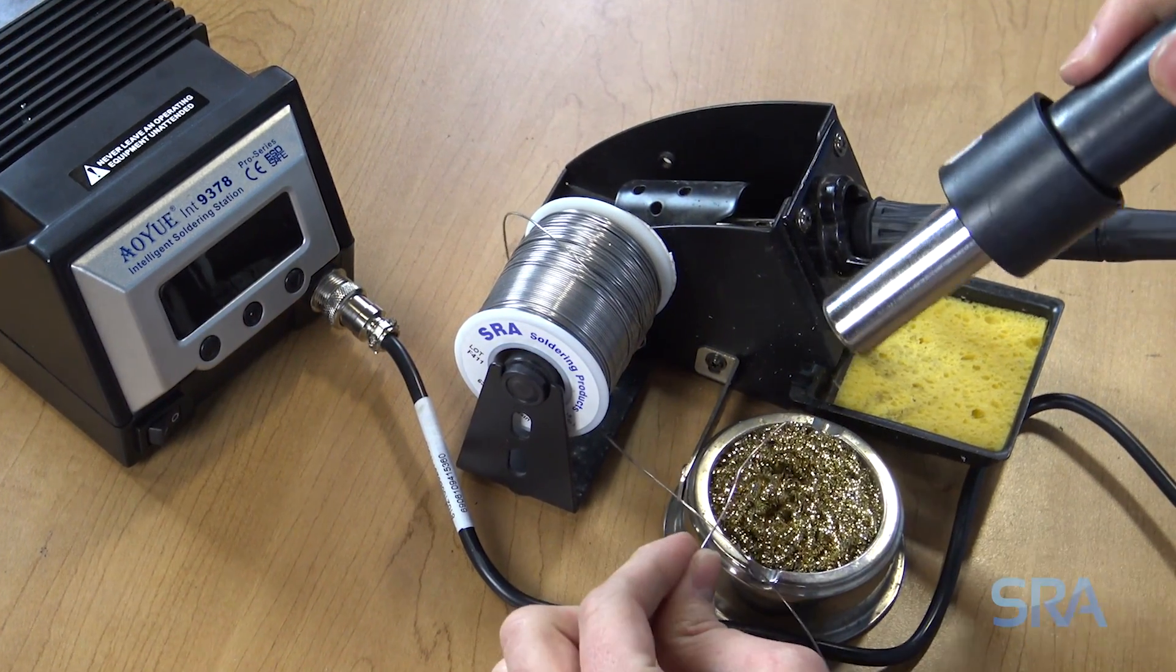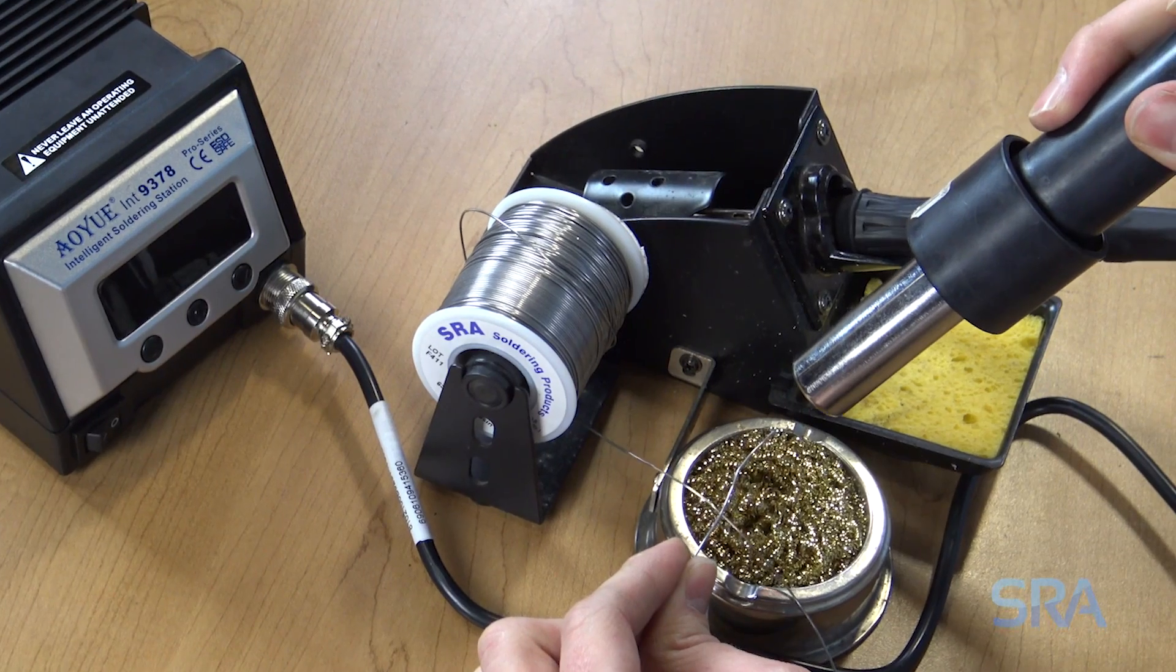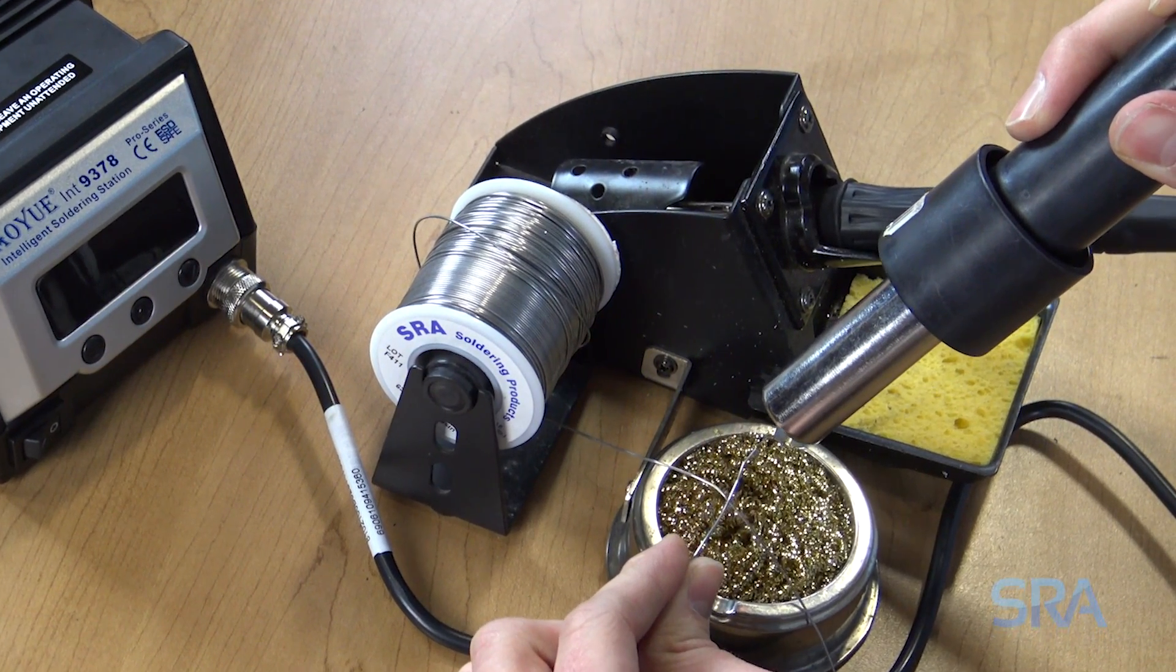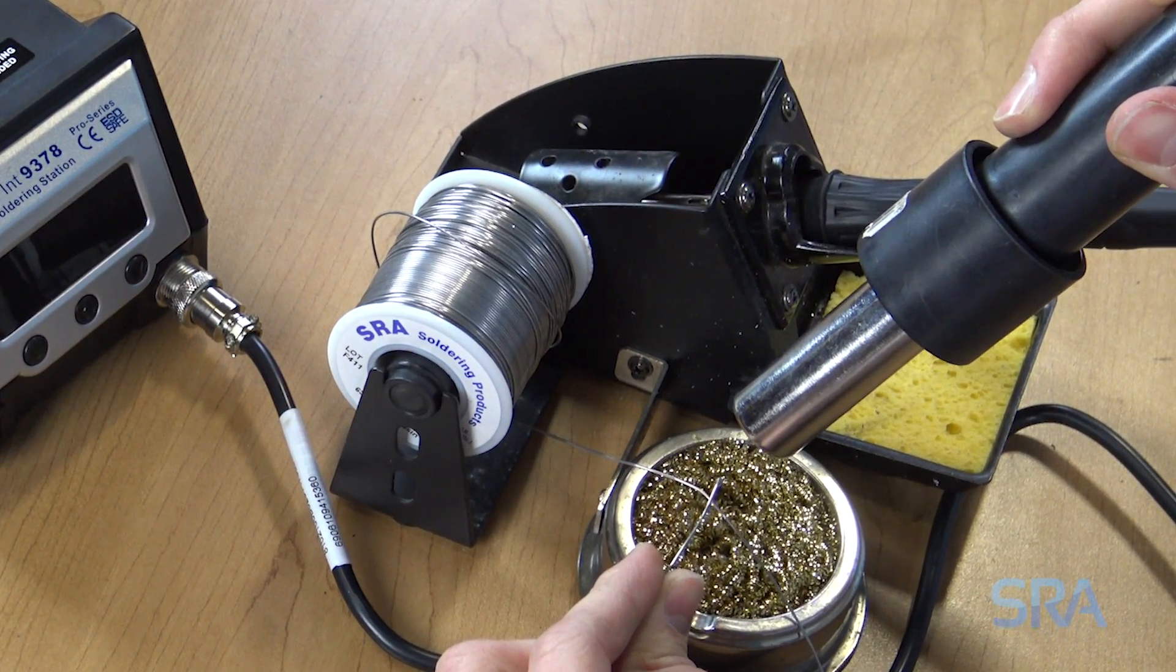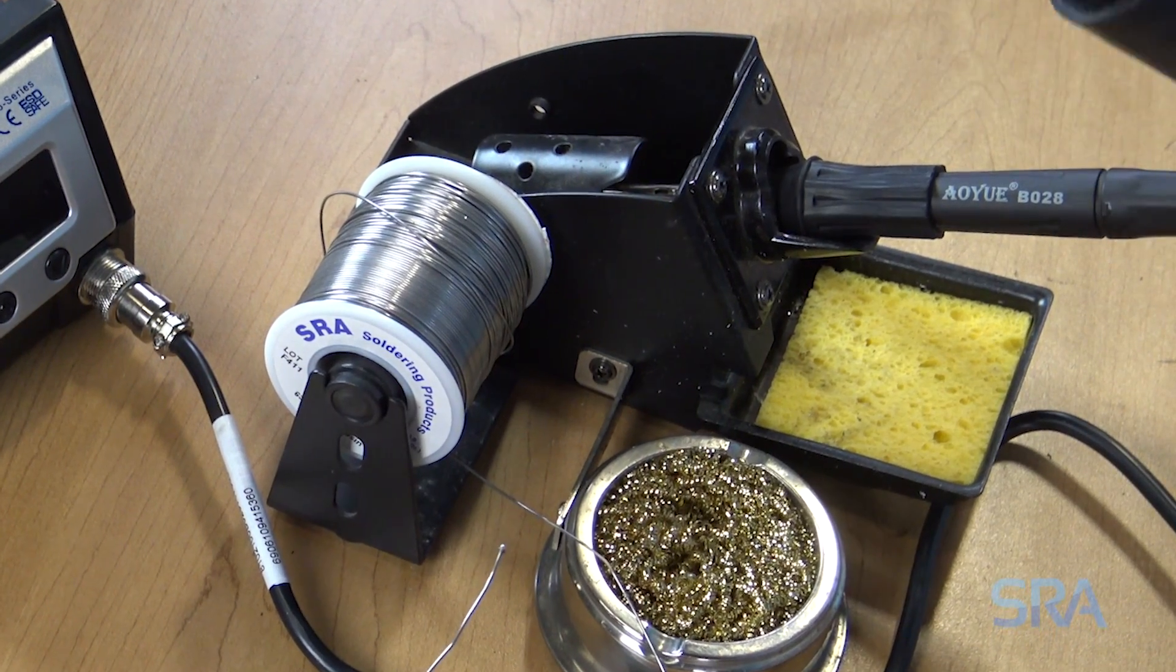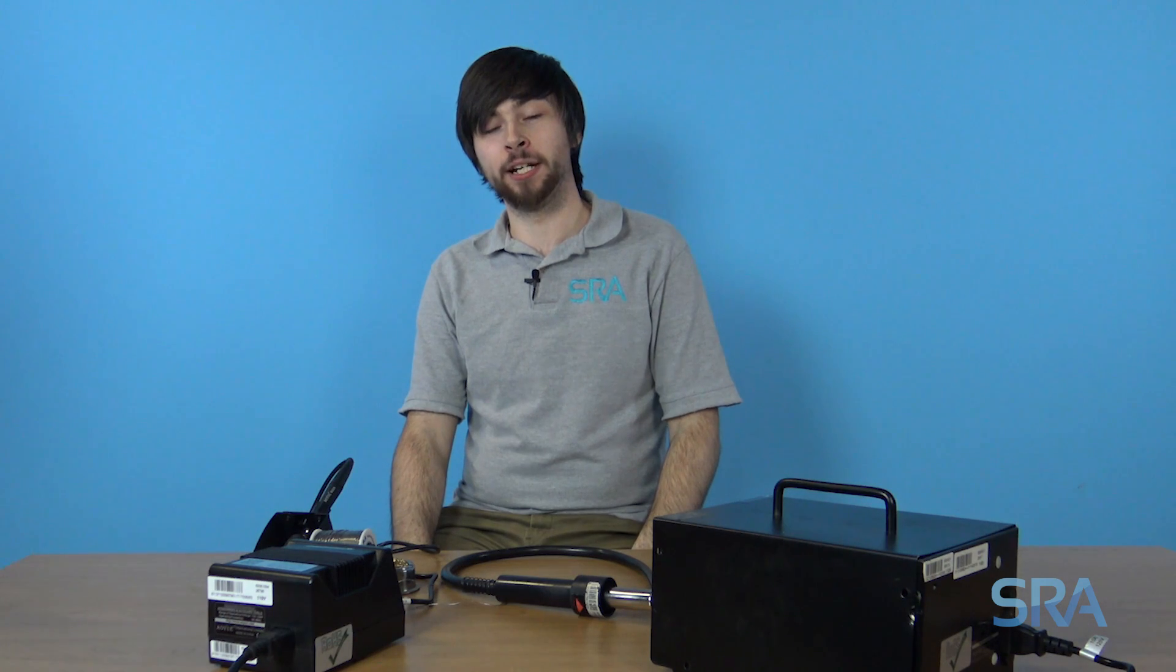I'm melting some solder here. Works as it should. Well, there you have it, how to replace a heating element in a hot air gun. If you have any questions, feel free to comment below. And for a list of the tools and products used in this video, please see the description. Thanks for watching.